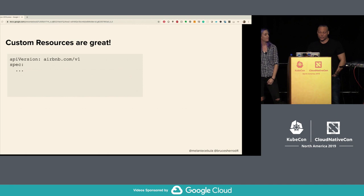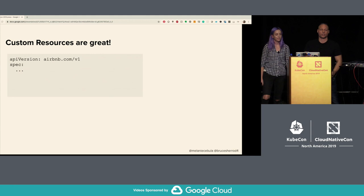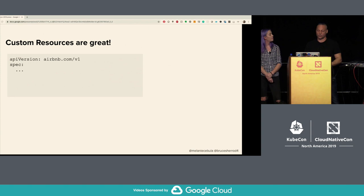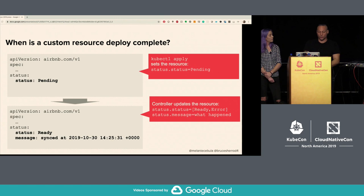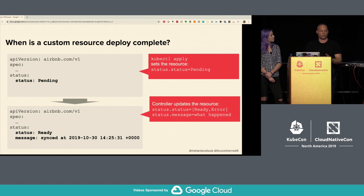Next: where's my custom resource? Custom resources are great — at Airbnb we use them a lot, especially to track resources external to the Kubernetes cluster associated with a service, such as storage, dashboards, alerts, and AWS resources like IAM roles. One challenge is knowing when a deploy has completed. We came up with a simple idea: use the status field in the resource. kubectl apply sets the status to pending, the controller wakes up when it receives the new custom resource, applies changes, then sets status to either ready or error. Easy for the controller to know when to run, and easy for an operator to check manually.